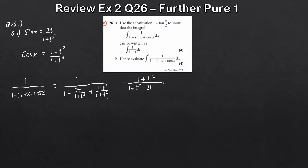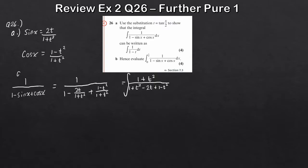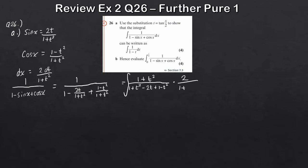So the denominator becomes (1 + t²) - 2t + (1 - t²). Now, our integral is in terms of t, but the original integral was in terms of x, so we need to replace dx. dx is a standard result: dx = 2dt/(1 + t²). We now multiply through by this, so we're integrating with respect to t using 2/(1 + t²) dt.